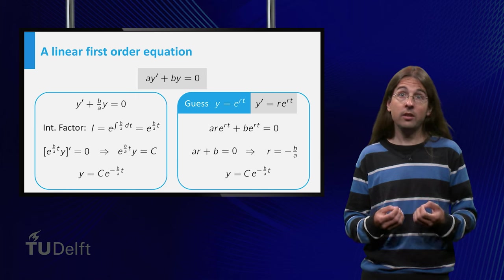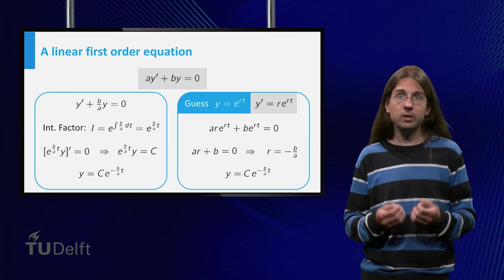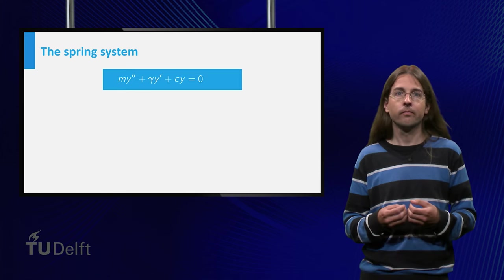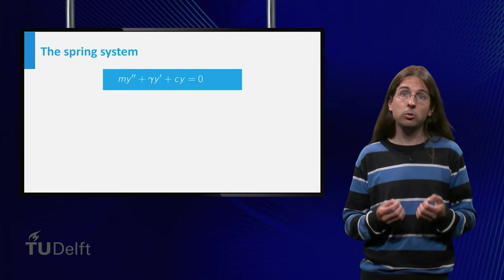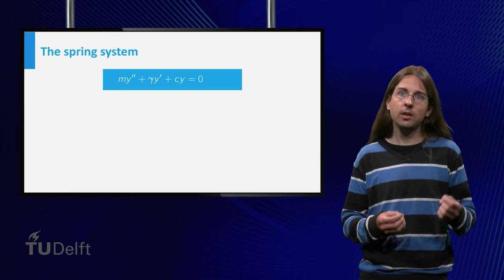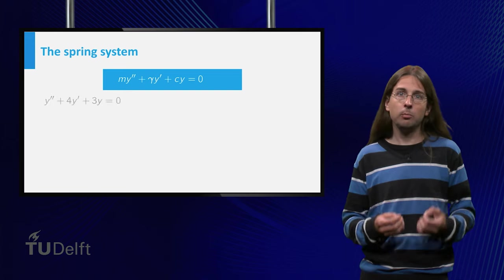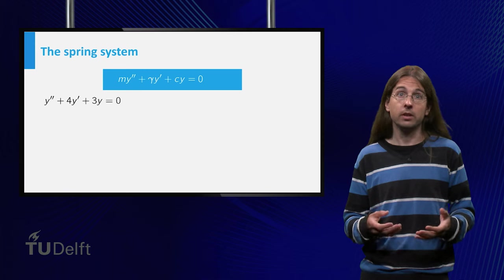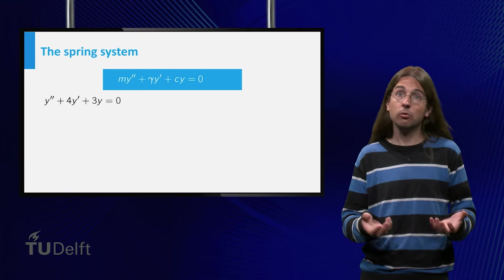The intermediate equation a·r plus b equals zero is called the characteristic equation for this linear differential equation. Let us now return to our goal of solving the second order differential equation m·y double prime plus gamma·y prime plus c times y equals zero. We will consider the example where m equals 1, gamma equals 4, and c equals 3, thus y double prime plus 4y prime plus 3y equals zero.